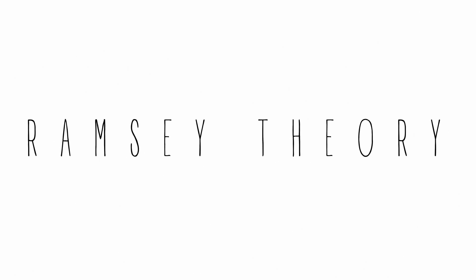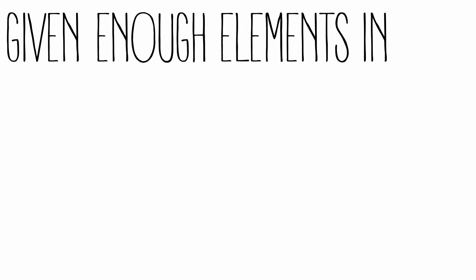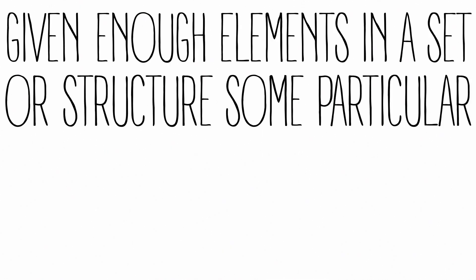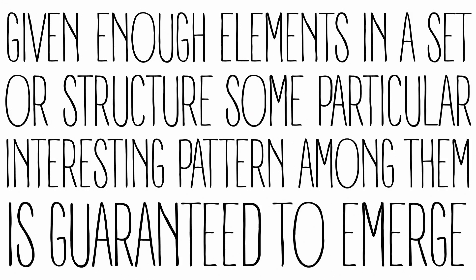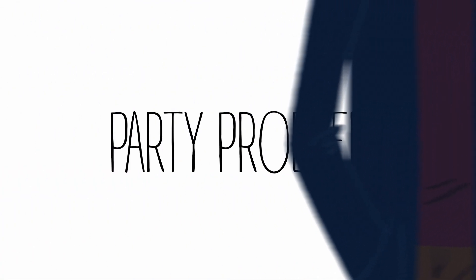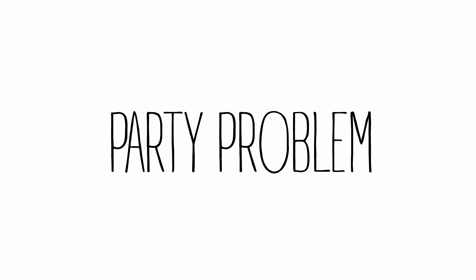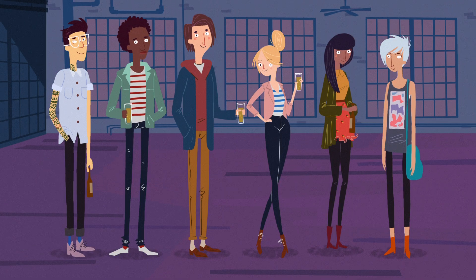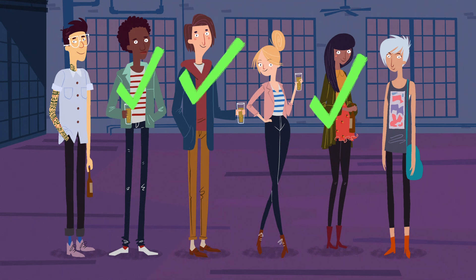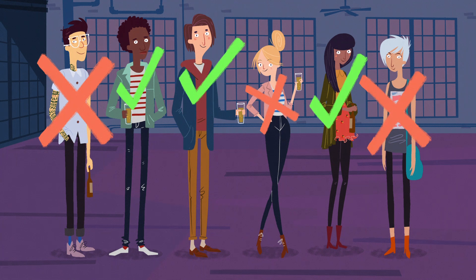Simply put, it states that given enough elements in a set or structure, some particular interesting pattern among them is guaranteed to emerge. As a simple example, let's look at what's called the party problem, a classic illustration of Ramsey theory. Suppose there are at least six people at a party. Amazingly enough, we can say for sure that some group of three of them either all know each other or have never met before, without knowing a single thing about them.